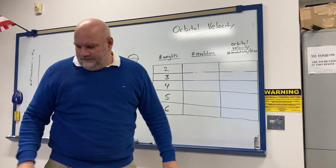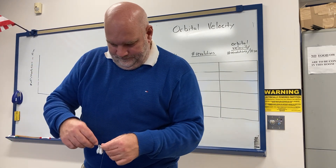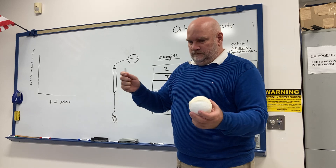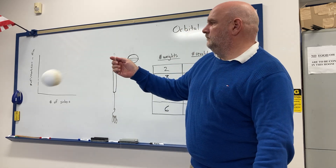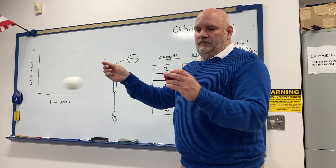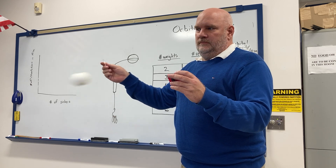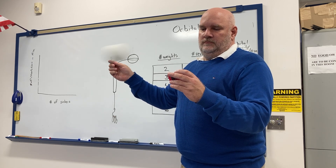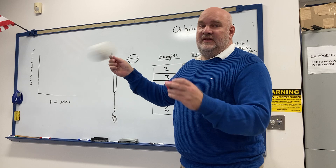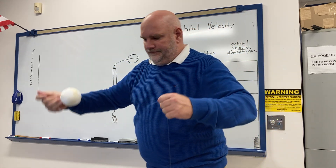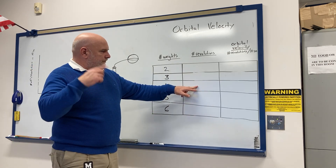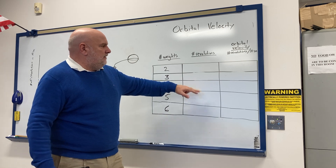Now I'm going to do the same thing with four sinkers. However many times you counted — that's how many times around — and that number divided by 10 gives you the orbital velocity for this trial.